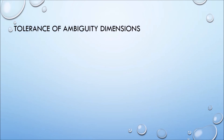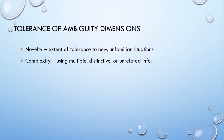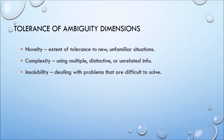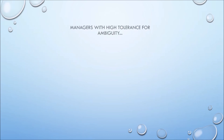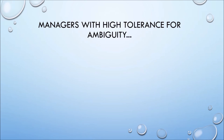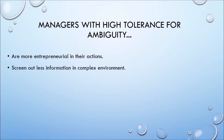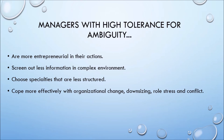Tolerance of ambiguity dimensions: Novelty — extent of tolerance to new, unfamiliar situations; Complexity — using multiple, distinctive, or unrelated information; Insolubility — dealing with problems that are difficult to solve. Managers with high tolerance for ambiguity are more entrepreneurial in their actions, screen out less information in complex environments, choose specialties that are less structured, and cope more effectively with organizational change, downsizing, role stress, and conflict.